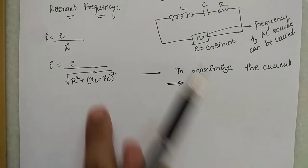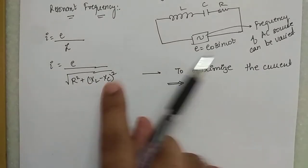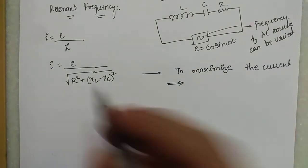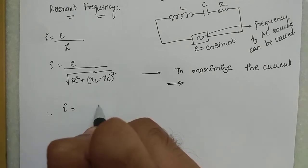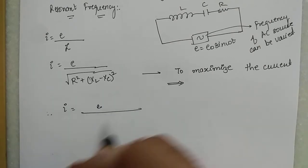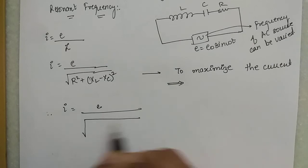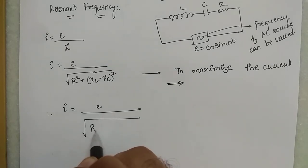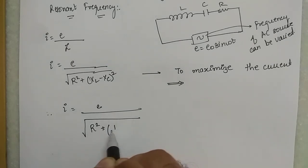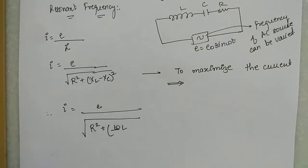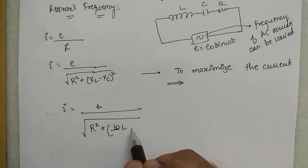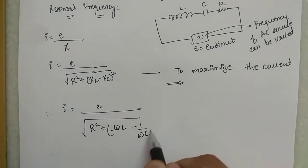Let's write X_L and X_C in terms of omega. Current equals E divided by the square root of R² plus (ωL minus 1/(ωC))². To maximize the current, the denominator must be minimum. Since both terms are perfect squares, their minimum value is zero.